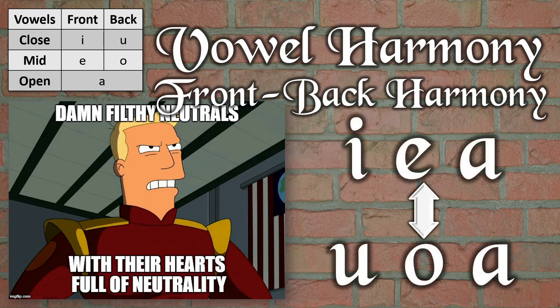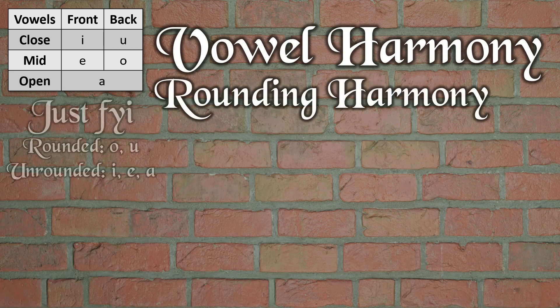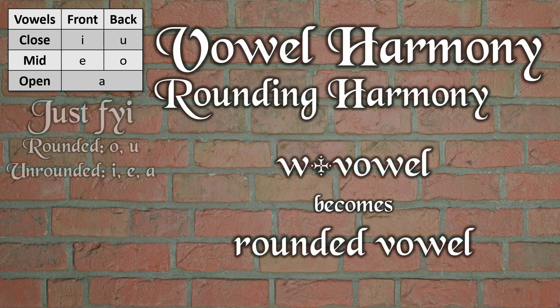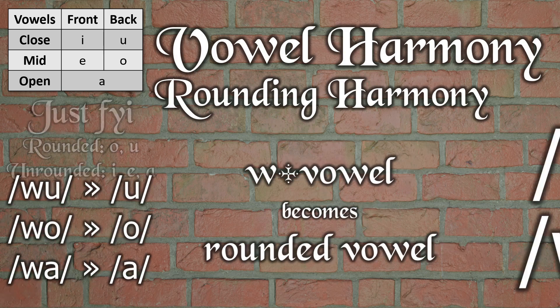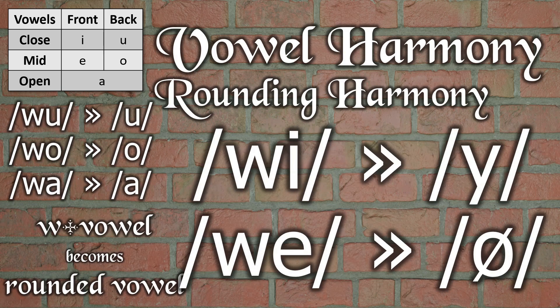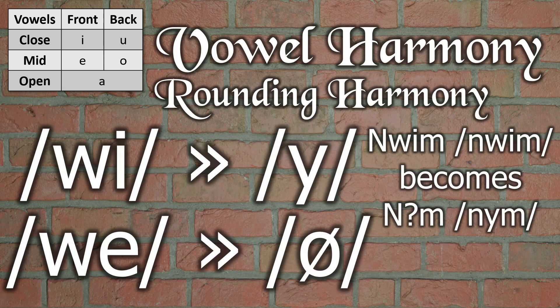But going back to the assimilation of rounding, we could say the rounding of your lips when making the sound /w/ assimilates into the vowel, with /w/ being lost. /o/ and /ɔ/ are already rounded, and /a/ is a rare vowel which we'll say never becomes properly distinct. So we get /ʉ/ from /wi/, and /ʉ/ from /we/. So 'neum' (day) becomes 'neum.'